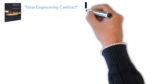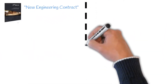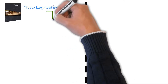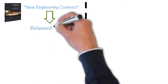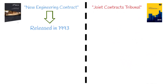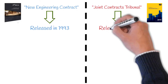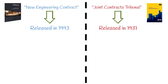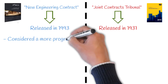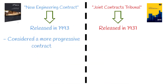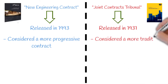The NEC, which stands for New Engineering Contracts, is most certainly newer than the JCT, with the first edition released in 1993. The JCT, on the other hand, which stands for Joint Contracts Tribunal, was established all the way back in 1931. As you can imagine, the NEC is often considered a more progressive contract aiming to patch some of the downfalls of prior construction contracts, while the JCT is often described as a more traditional contract.